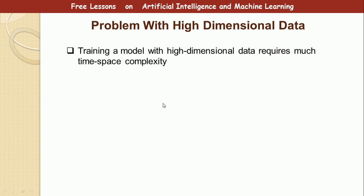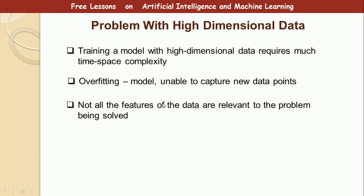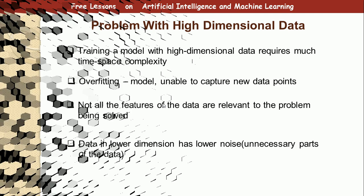To summarize the problems with high-dimensional data: training a model with high-dimensional data requires so much time and space complexity, leads to overfitting, and is unable to capture new data points. Not all the features of the data are relevant to the problem being solved. Data in lower dimensions also has lower noise on unnecessary parts. So it's better to handle data in lower dimensions.